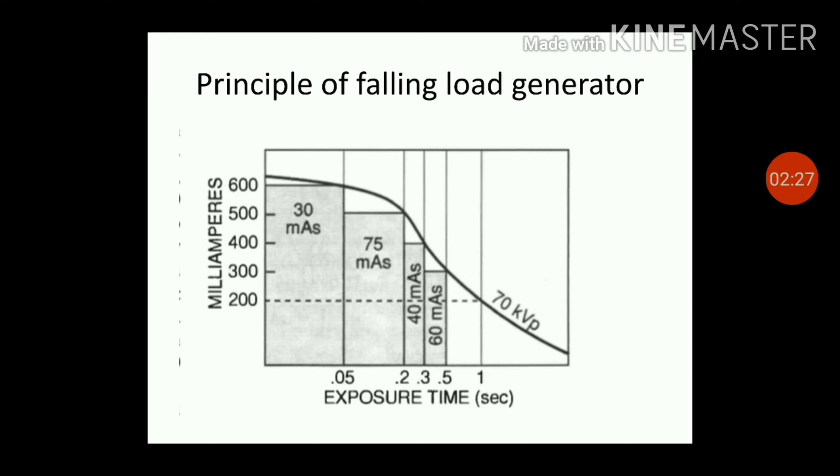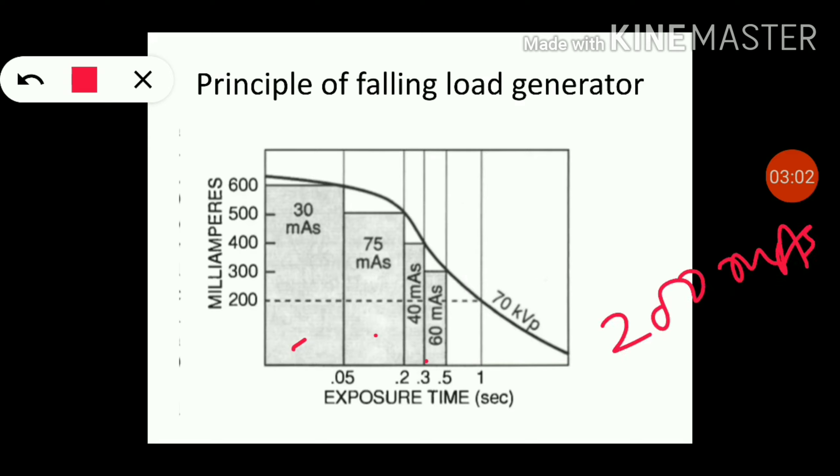Let us examine how the falling load principle allows us to use a higher mA setting to obtain 200 mAs in a shorter time. This shaded area is the minimum shorter time to get a higher mA setting to obtain 200 mAs. The operator does not set an exposure time but tells the generator to produce 200 mAs at 70 kVp.